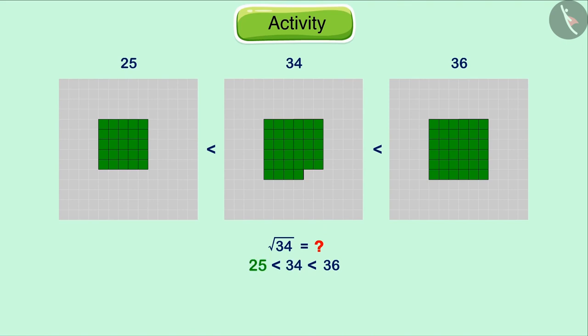But 34 falls between 25 and 36. Therefore, the square root of 34 will also be somewhere between the square root of these numbers, which means the square root of 34 will be between 5 and 6. It will be more than 5 but less than 6. And in this way, we estimated the square root of the number 34 that is not a perfect square.